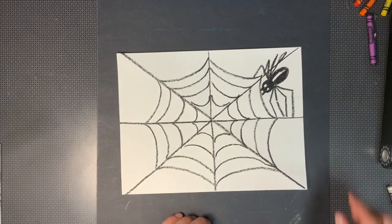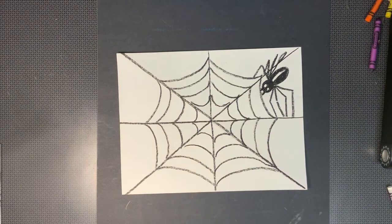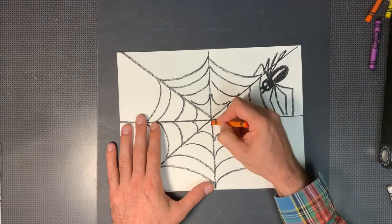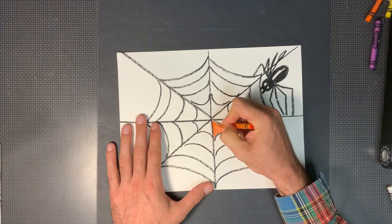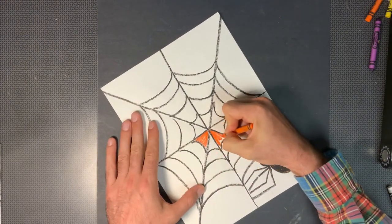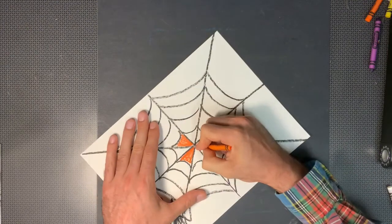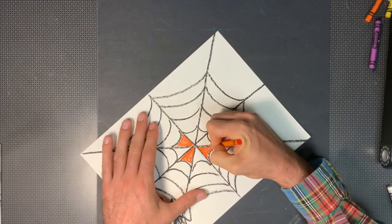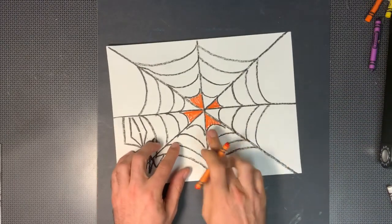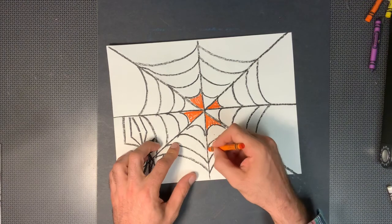What you can do if you want then is color your spider web in Halloween colors. So maybe you want to make a pattern and I don't think I'm going to make a pattern. I'm going to go every other one. So I'm going to skip and since I've done orange here I'm going to make this white and then orange again.